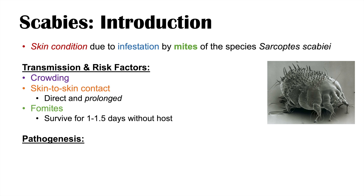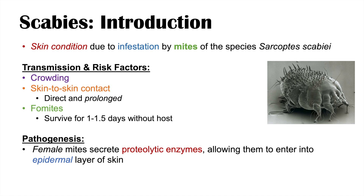So what is the pathogenesis of scabies? A female mite is what generally causes the signs and symptoms. A female mite secretes proteolytic enzymes — enzymes that break down proteins — which allow it to enter into the epidermal layer, the outer surface layer of the skin. Once inside, they burrow in and lay about two to three eggs per day for about four to six weeks until they die.